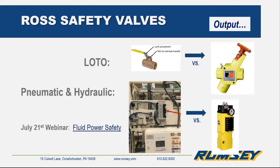Here we have Ross Safety Valves, which is a company that we are also a vendor for. When we talk about functional safety, we aren't just talking about electrical aspects — a true risk assessment takes everything into account, including pneumatic, hydraulic, mechanical, gravitational, anything that could potentially harm someone. Ross takes the pneumatic and hydraulic options and makes them as safe as possible. Products like this are required by OSHA law in lockout tagout requirements in place of something like a ball valve. We have a safety webinar on July 21st going over these in much more detail — the pneumatic and hydraulic options that are out there.